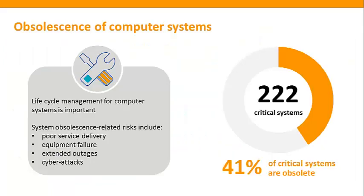Life cycle management for computer systems is important due to the high speed of innovation and relatively short lifespans. They can quickly become obsolete if not managed carefully, potentially leading to poor service delivery, equipment failure, extended outages, or cyber attacks. Based on the analysis of data gathered from audited agencies, 41% of systems that support critical business functions are obsolete.